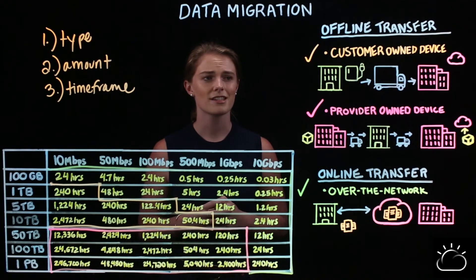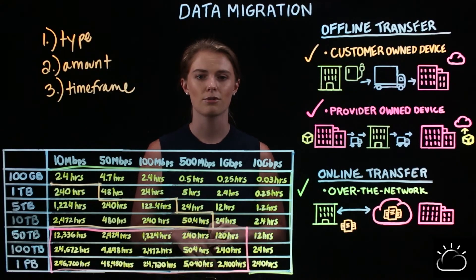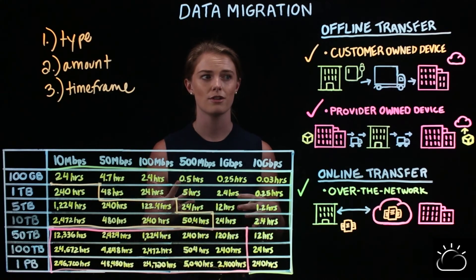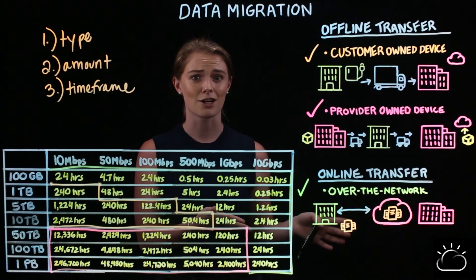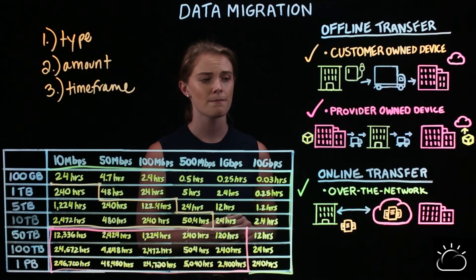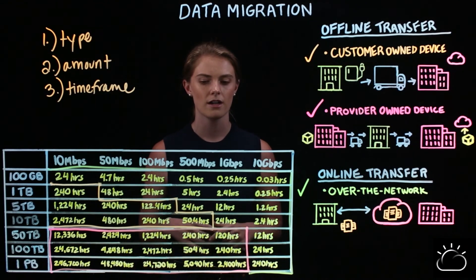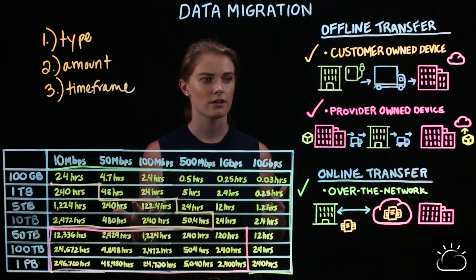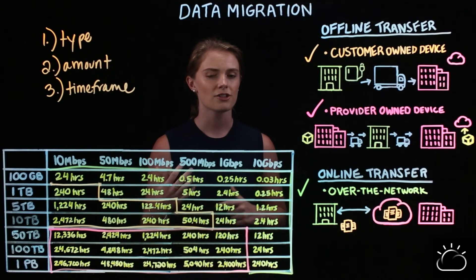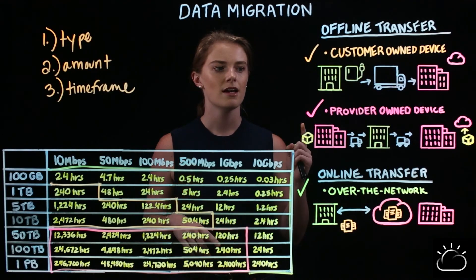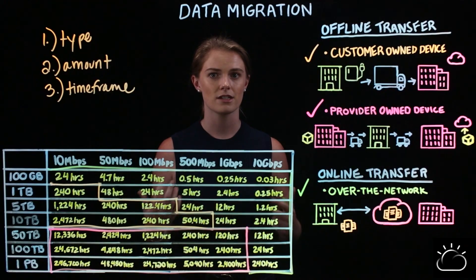A couple of things to consider: for the customer-owned device, definitely look at your cloud provider's web page — they'll outline any hardware specifications or requirements so you can send a device that's compatible. For the provider-owned device, look at their web pages to see features and benefits of the varying devices and capacities. The size of your workload will determine what capacity you need. Extra features like GPS tracking or edge computing — look and see if any of those are of interest and whether the device models match.